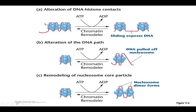Looking more closely at a diagram: here's the DNA, tightly wound around the histones. You can slide the nucleosome down, which would expose the DNA and allow RNA polymerase and the transcription machinery to find the start of the gene. You can also alter the DNA path so that instead of being wound around and folding down, the DNA is physically pulled off the nucleosome — perhaps only half-wrapped around it.